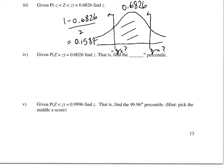Doing the math, that area is 0.1587. Looking inside and out — from inside the table to the margins — we find the negative Z. And when we do that, we see that the negative Z is negative 1. If the negative Z is negative 1, then the positive Z must be positive 1. Where the question was 'find Z,' our answer is 1.